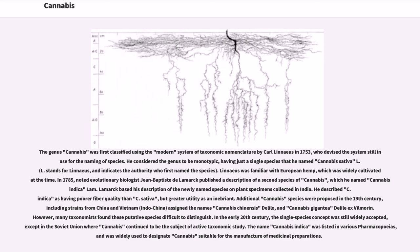The genus Cannabis was first classified using the modern system of taxonomic nomenclature by Carl Linnaeus in 1753, who considered the genus to be monotypic, having just a single species that he named Cannabis sativa L. — 'L' stands for Linnaeus and indicates the authority who first named the species. In 1785, noted evolutionary biologist Jean-Baptiste de Lamarck published a description of a second species of Cannabis, which he named Cannabis indica. Lamarck based his description on plant specimens collected in India, describing C. indica as having poorer fiber quality than C. sativa, but greater utility as an inebriant. Additional cannabis species were proposed in the 19th century, including strains from China and Vietnam, though many taxonomists found these putative species difficult to distinguish.